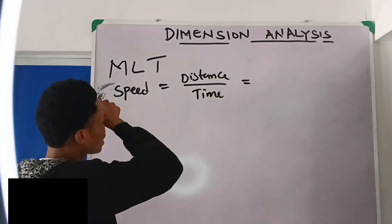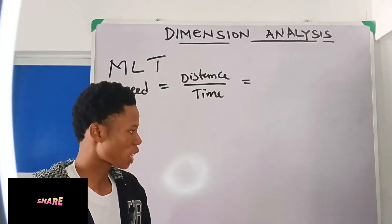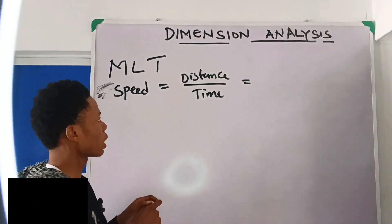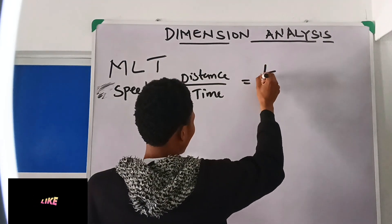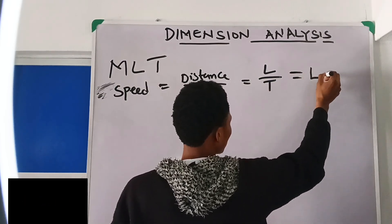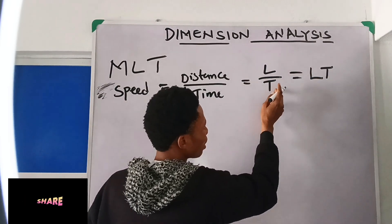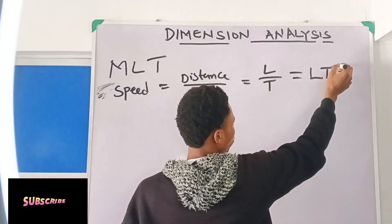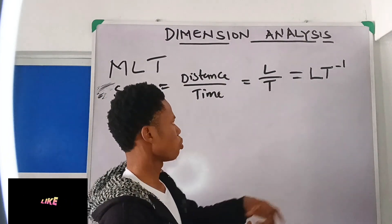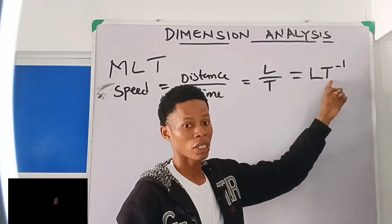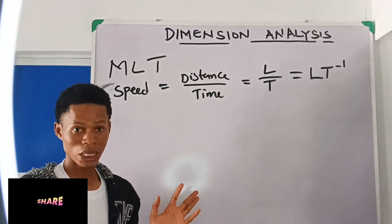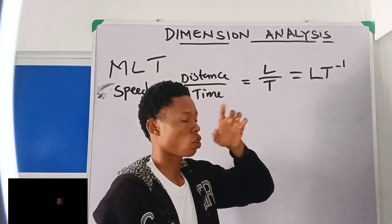Distance from one point to another is the length between them, so distance is length. And time is T. So instead of writing distance over time, it's the same as writing L over T. If you want to bring T up, you put minus one, giving LT⁻¹. So this is the dimension of speed.